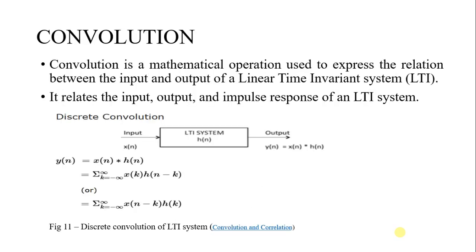Here is convolution. Convolution is a mathematical operation used to express the relation between the input and output of a linear time invariant (LTI) system. It relates the input, output, and impulse response of an LTI system. Here is how the discrete convolution system looks like: an input x[n] is passed through the LTI system h[n], and the output is y[n] = x[n] * h[n]. Here is the figure.